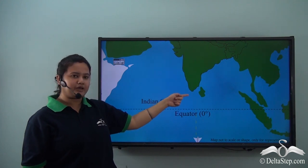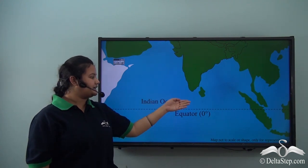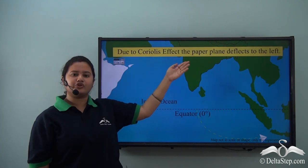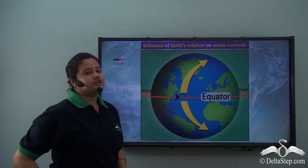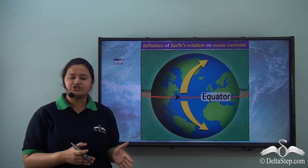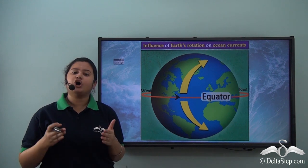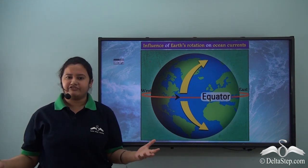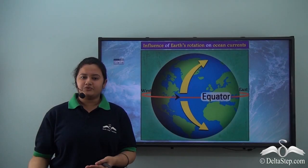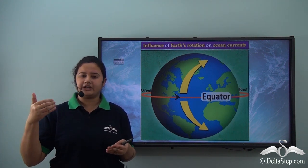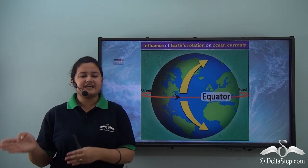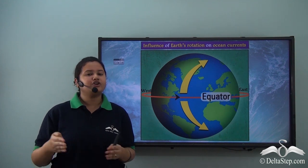Now if you throw the same paper plane from the equator to the south, it does not land straight to the south — it deflects to the left. This also happens due to the Coriolis effect. So the Coriolis effect is a type of centrifugal force which causes an object to move away from the centre of the rotating body, or it is a kind of deflective force which deflects the direction of winds and of the ocean currents.